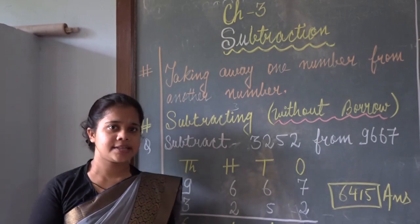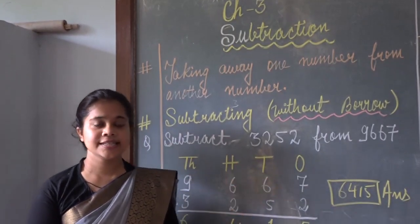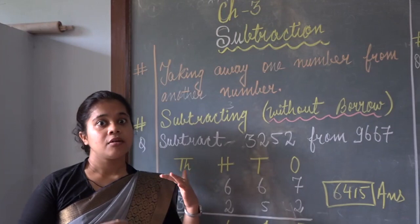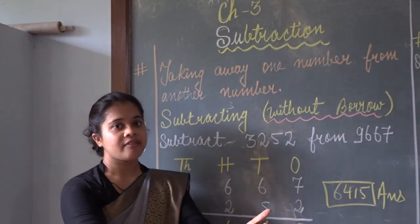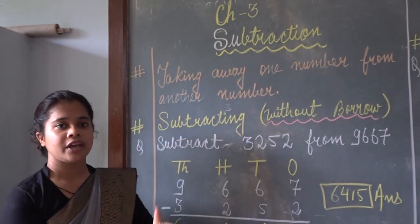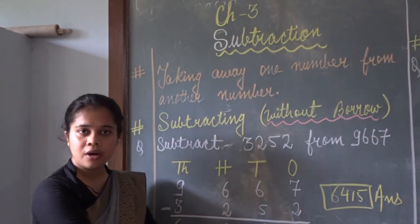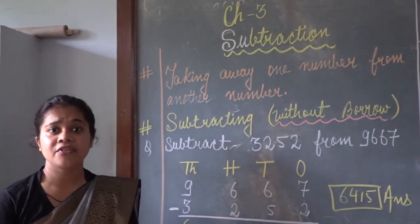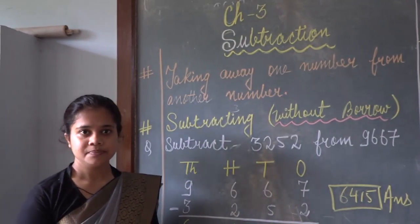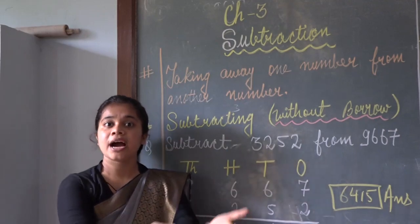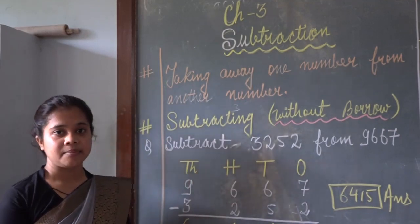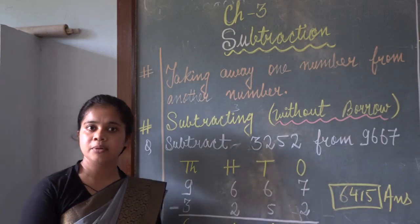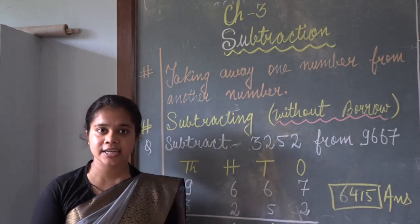Let us take the example of chocolates. Now you are having 100 chocolates and you gave 50 chocolates to your mother. How many chocolates are left with you? 50. It means we are taking away a number — that much chocolate from you. We are deducting something.